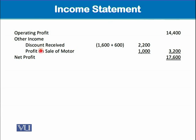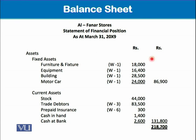The operating profit of 14,400 is carried forward and other income is added. Other income includes discount received: 1,600 from the trial balance plus 600 adjustment gives 2,200. Profit on sale of motor vehicle is 1,000. Total other income is 3,200, which added to operating profit gives a final net profit figure of 17,600.